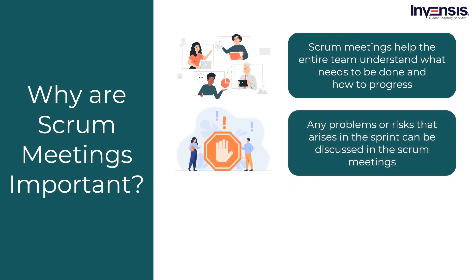Second, Scrum meetings help identify potential problems before they become serious. Any problems or bottlenecks arising in the sprint can be discussed in the Scrum meetings. In this way, the entire team knows about the problems and they can collectively come up with a solution. If other team members face the same problem, they will know how it was solved before and can implement the same solution. When a problem is discussed right when it occurs, it will cause less damage and is easier to fix before it causes any serious damage.